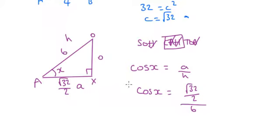So if we do the inverse Cos, √32 divided by 2 divided by 6, I've got 61.9.